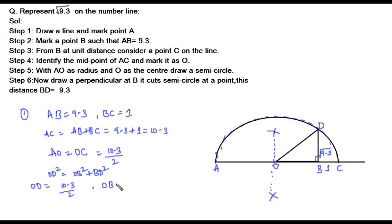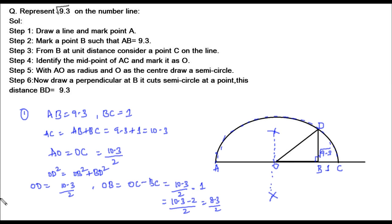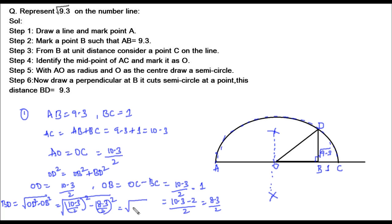To calculate OB, from the diagram OB equals OC minus BC. OC is the radius, which is 10.3 upon 2, minus BC which is 1 unit, giving 10.3 minus 2 upon 2, which equals 8.3 by 2. Substituting: BD equals square root of OD squared minus OB squared, which is square root of (10.3/2) squared minus (8.3/2) squared, which simplifies to square root of 9.3.